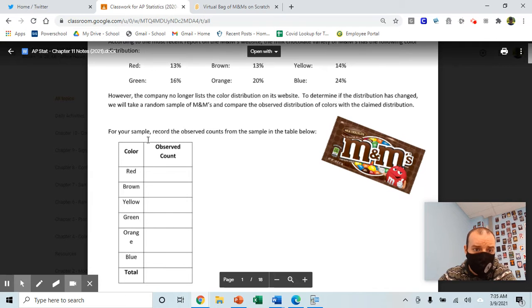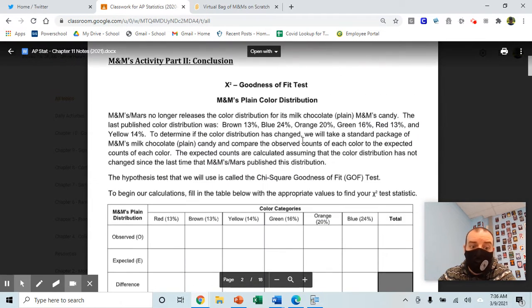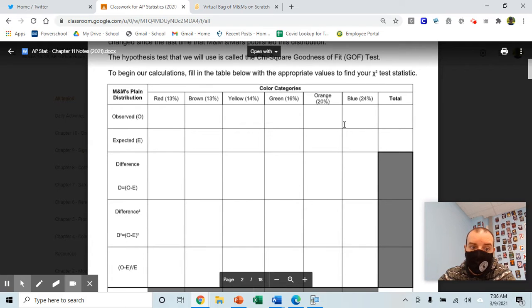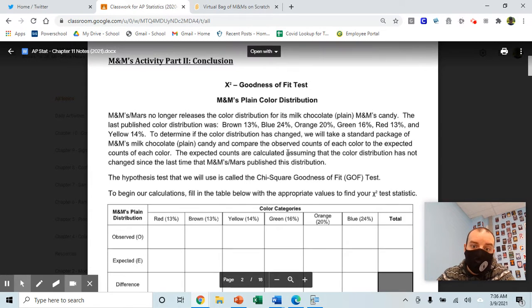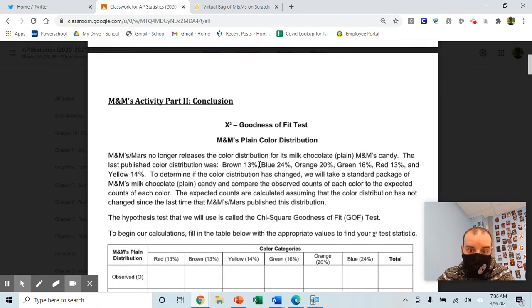So you'll fill out your observed counts here. After you fill out your observed counts, you'll go ahead and fill out this table here. This table is calculating your chi-squared test statistic. So you'll fill out your observed counts and your expected counts. In order to find your expected counts, you're going to need to multiply the percentage for each color times your total sample size.